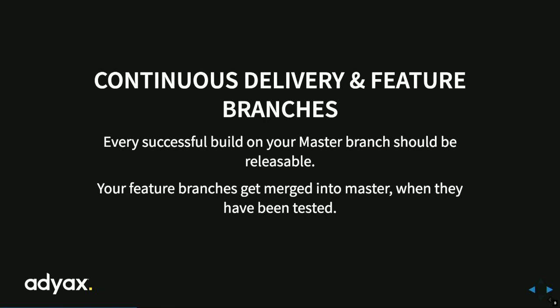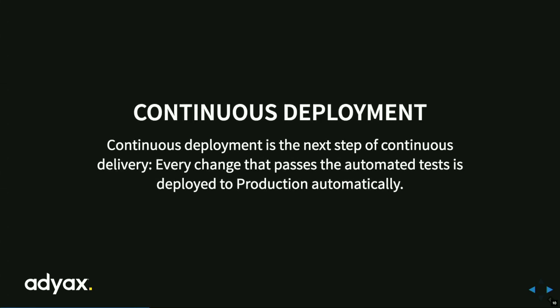For continuous delivery, every successful build on your master branch should be releasable — when you put something in master it's stable code and can be deployed. We only merge feature branches when they've been tested. The third term is continuous deployment, which is the next step beyond continuous delivery — automating delivery all the way to production. For example, when a new Drupal security update is detected, the system automatically merges it to the main branch and deploys it. This is totally possible.